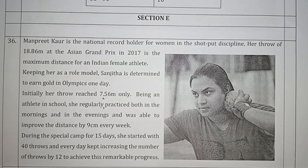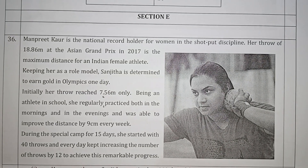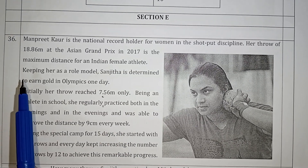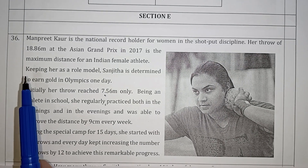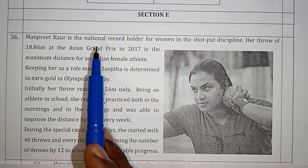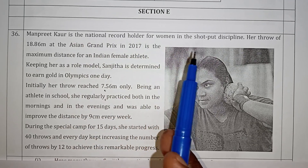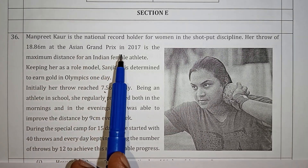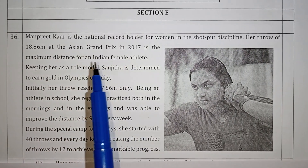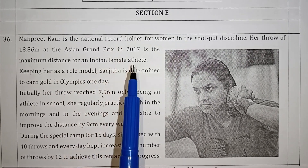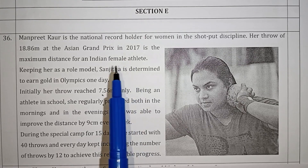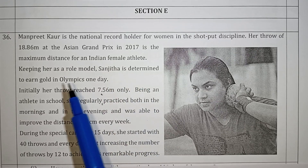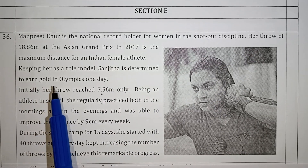Students, this is a CBC class 10 year 23-24 sample paper case study question. Manpreet Kaur is a national record holder for women in the shot put discipline. Her throw of 18.86 meters at the Asian Grand Prix in 2017 is the maximum distance for an Indian female athlete. Keep her as a role model. Sanjitha is determined to earn gold in the Olympics one day.